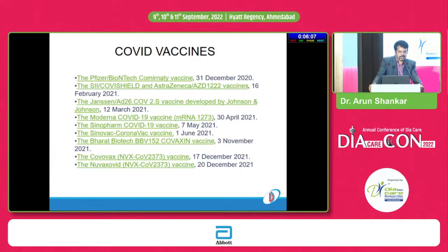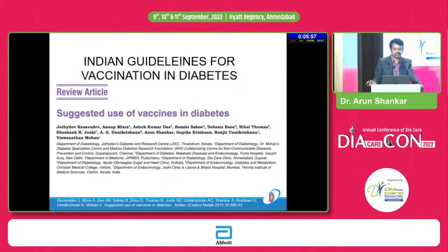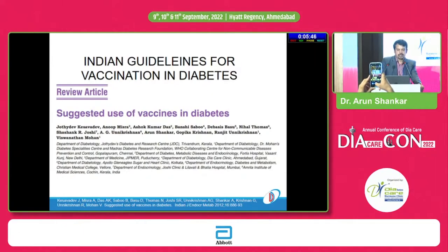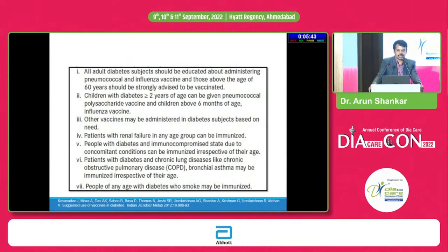As of now, this list of COVID vaccines is available, and three or four are advised for a third dose after the usual two-dose regimen. This was the Indian guideline for vaccination in diabetes, published in 2012, suggesting the use of vaccines in various situations in diabetes.